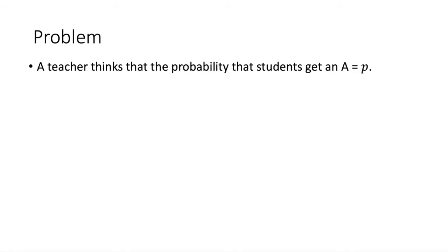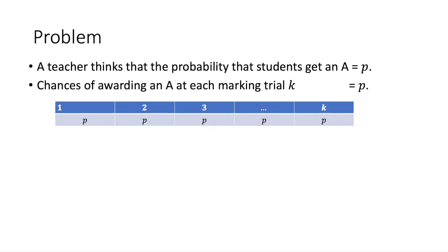Suppose a teacher thinks that only a fraction of his or her class will earn an A grade and the teacher also thinks that that fraction is P. We can also call it the probability of getting an A. Now the teacher trials many student attempts. At each trial K, where a trial really means marking an exam attempt, the probability of success, that is getting an A, remains the same, that is P. Now since probabilities sum to 1, the probability of not getting an A equals 1-P. For brevity, let's call that Q.